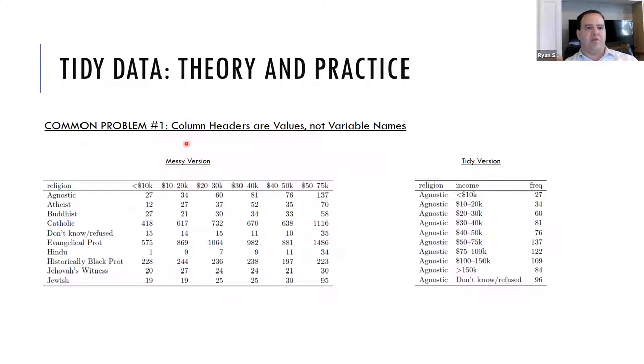So looking at common problem number one, column headers are values and not variable names. This is taken from a data set that compared religion and income brackets. And what's notable about this is that the religion is listed down on one side, and across the top are the values of a different column that's not present over here but should be. So these would be values of income, which is why in the tidy version, the religion is repeated once for each income bracket, and then the frequency is observed there at the end.